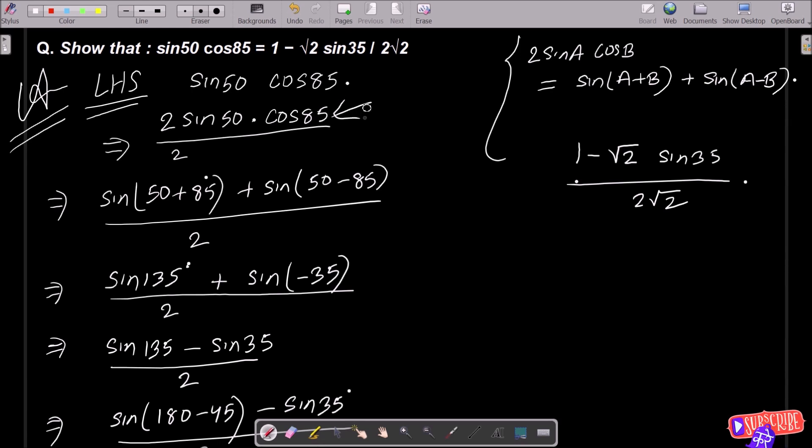So there you need to use here sin A plus B plus sin A minus B. So that here sin 50 plus 85 plus sin 50 minus 85 divided by 2. So sin 50 plus 85 that is 135 and this here minus 35 that comes.